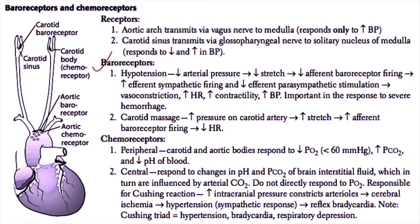In general, this causes increased vasoconstriction, increased heart rate, and increased contractility, which leads to an increase in blood pressure. This is the response commonly seen in severe hemorrhage, where the central nervous system increases its output of sympathetic firing and decreases its output of parasympathetic firing.